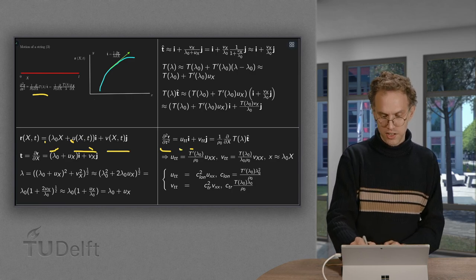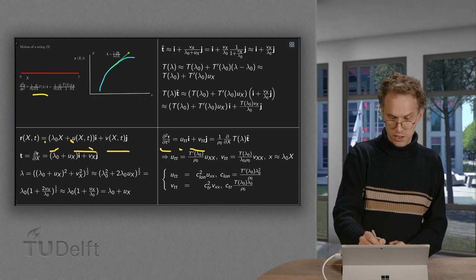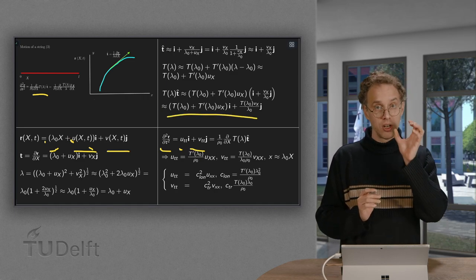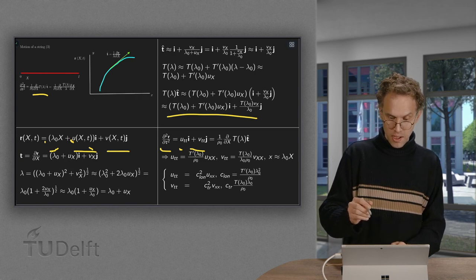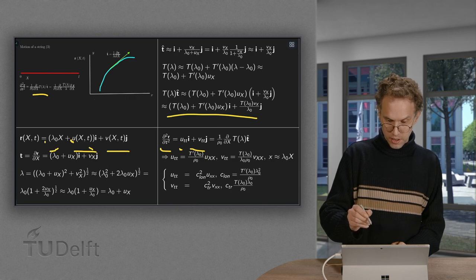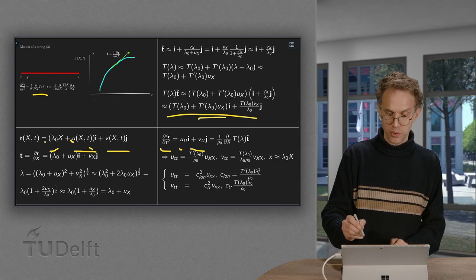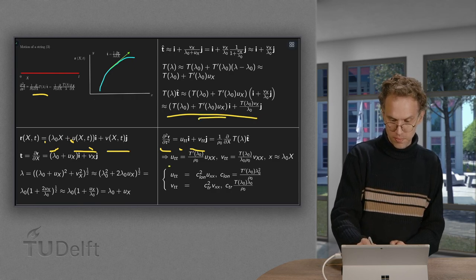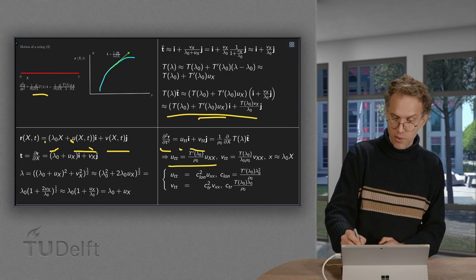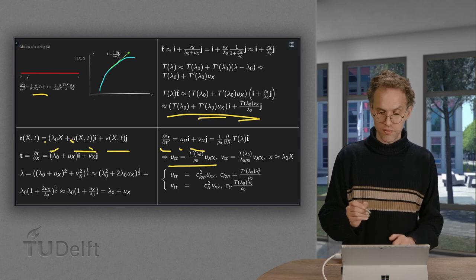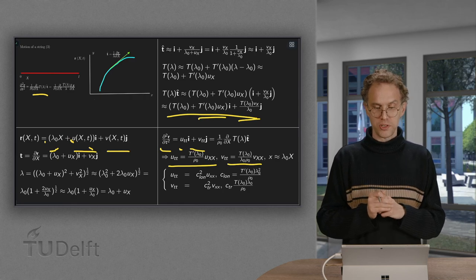And for the right hand side we have to differentiate this expression over here. With respect to the capital X. The first term drops out because it's a constant. So we are left with in the i direction only the t prime of lambda 0 times uxx. So that's over here. The component in the x direction. And for the component in the y direction we are only left with the t lambda 0 over lambda 0 times vxx. That's over here. And then we are almost done. You already see a wave equation rising.